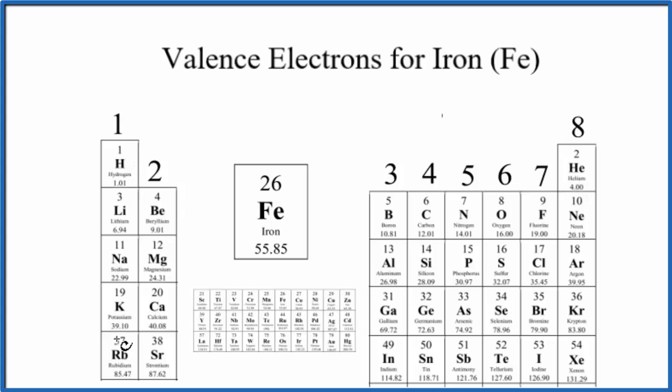Group 1, one valence electron. Group 2, two valence electrons. Iron's right here in the transition metals. This is also called the D block.